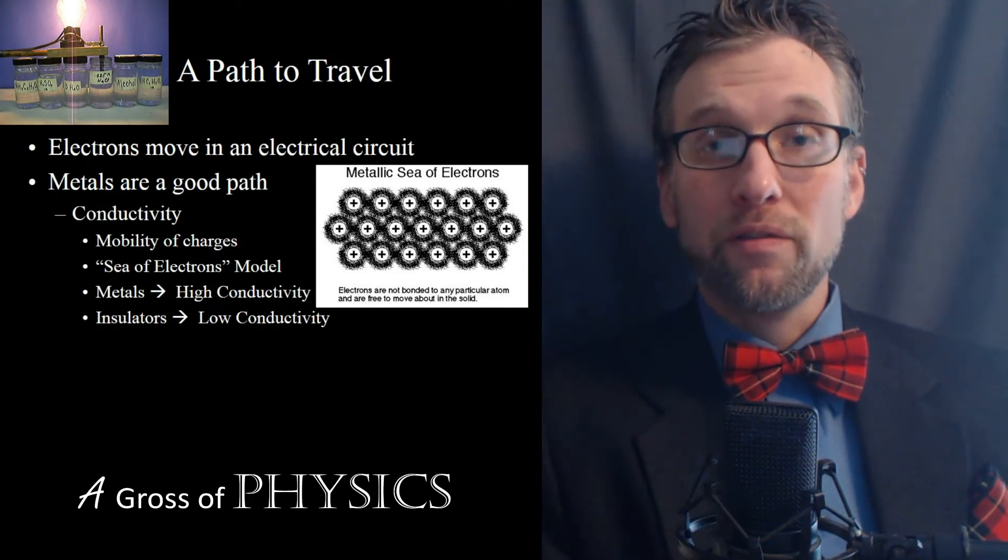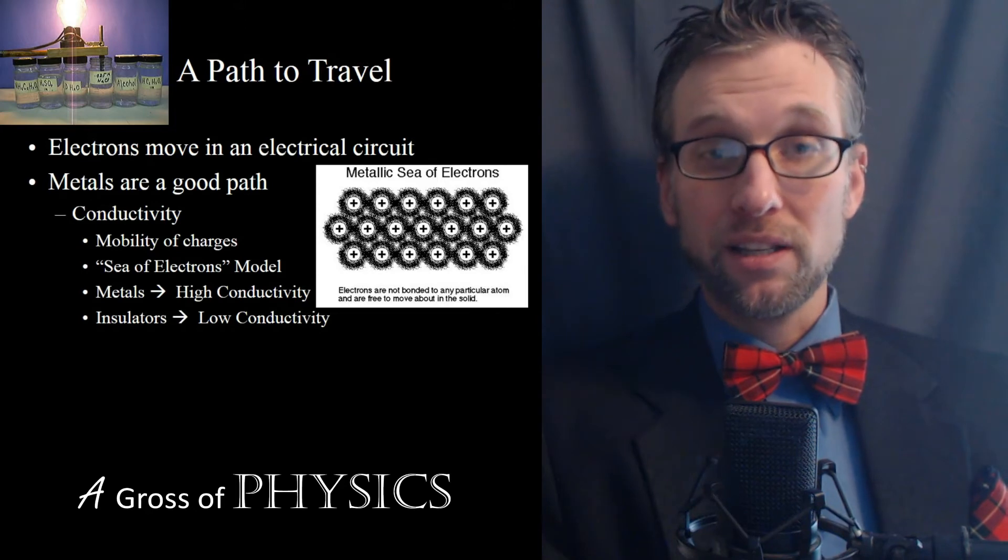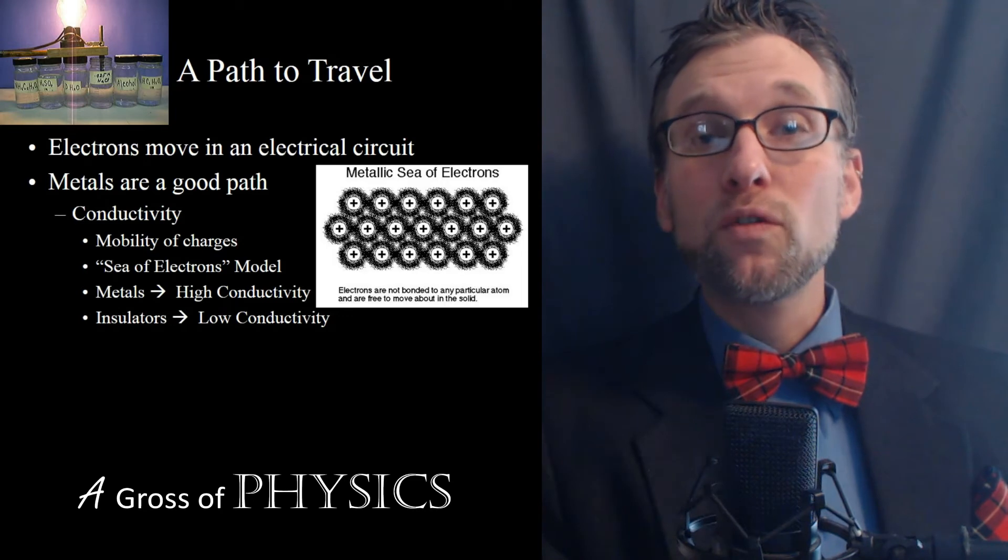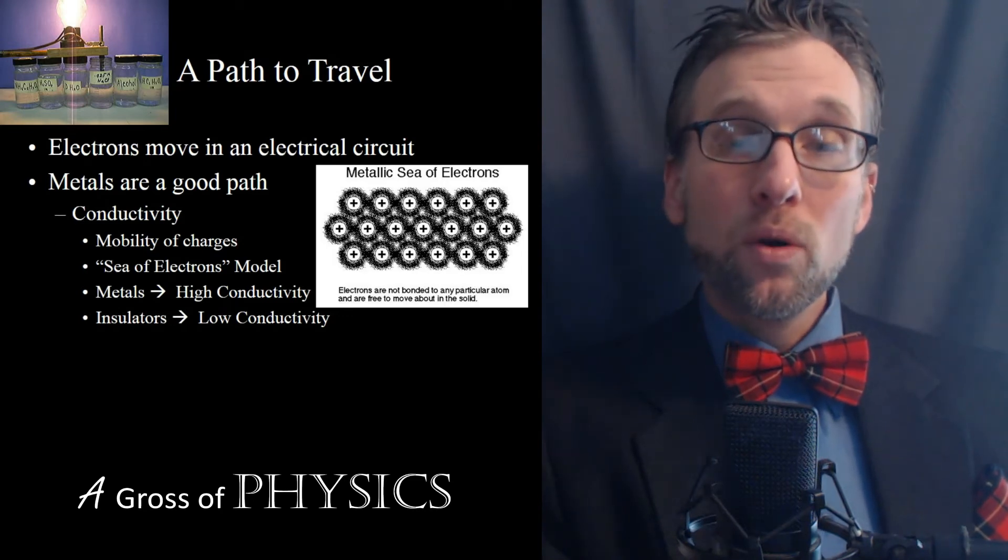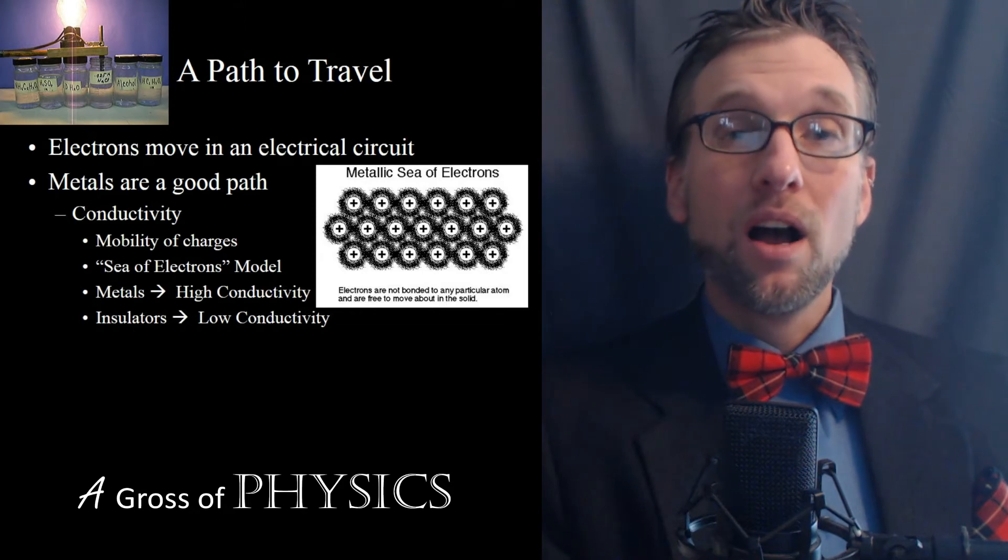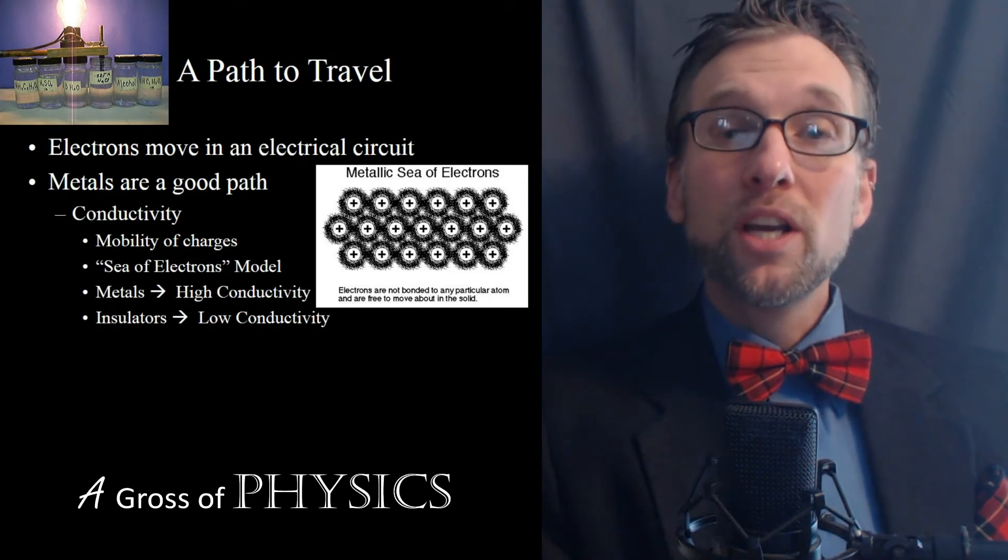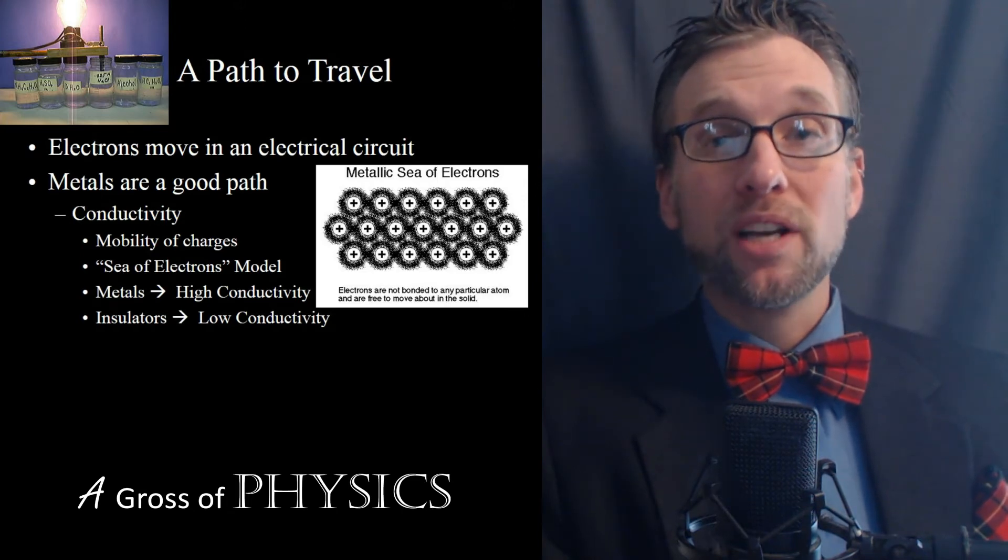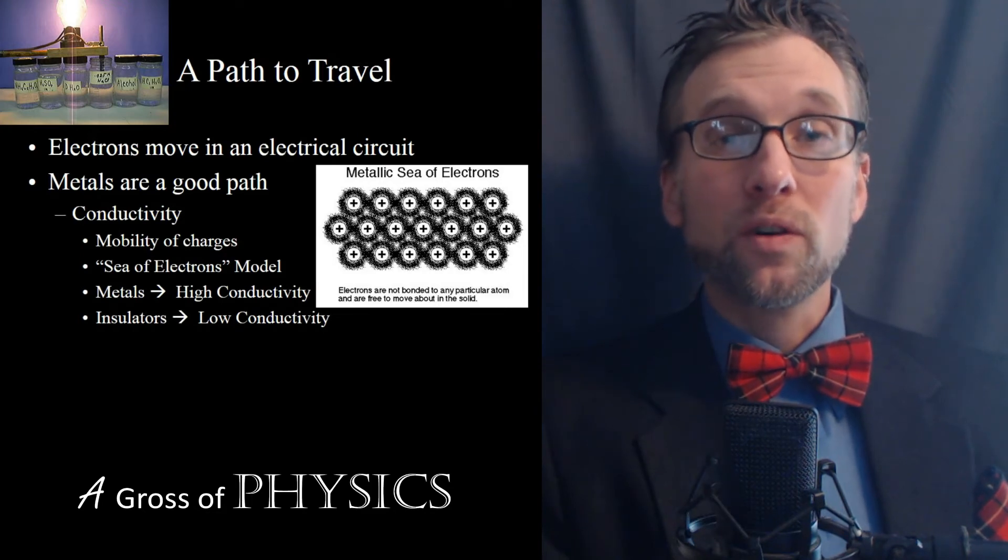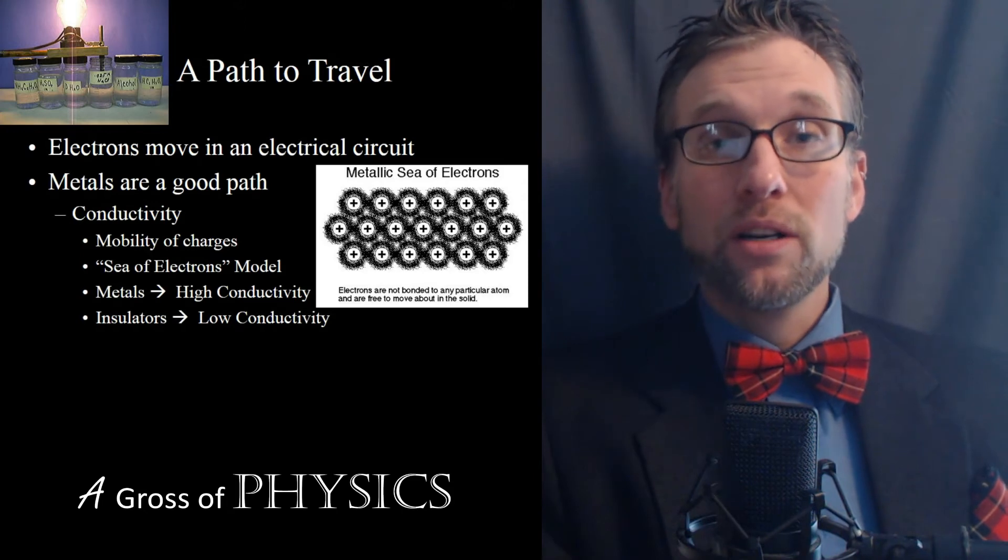Metals have weak holds on their valence electrons, and typically in the periodic table they're listed on the left. Now when that is the case, the electrons are free to move quite readily. So the mobility of the charges is what we call the conductivity of the material, and metals have high conductivity.